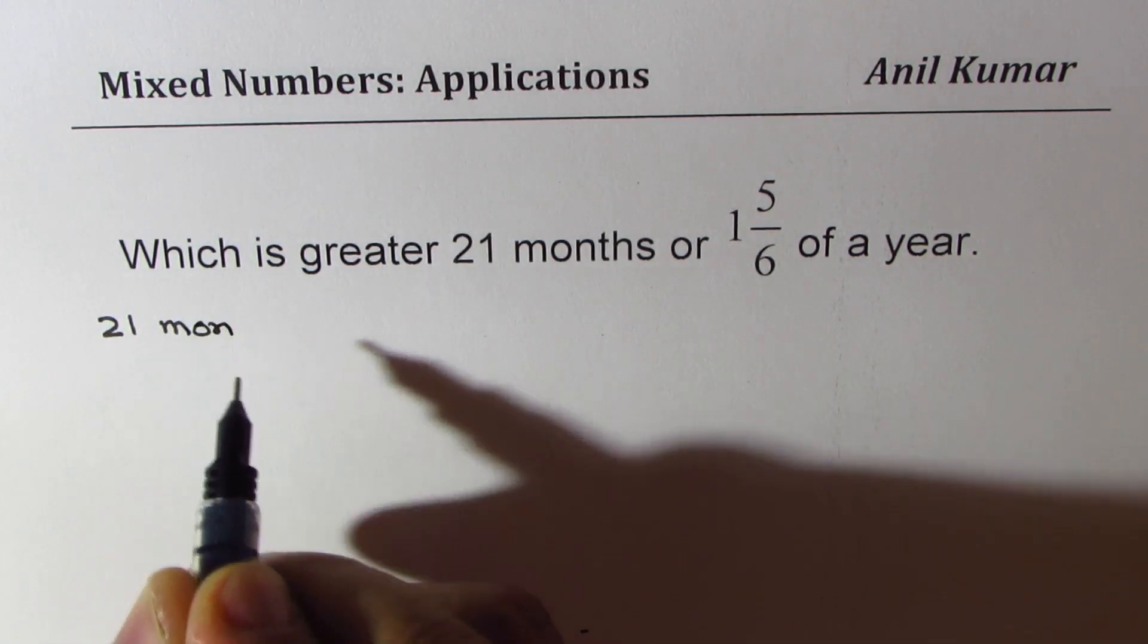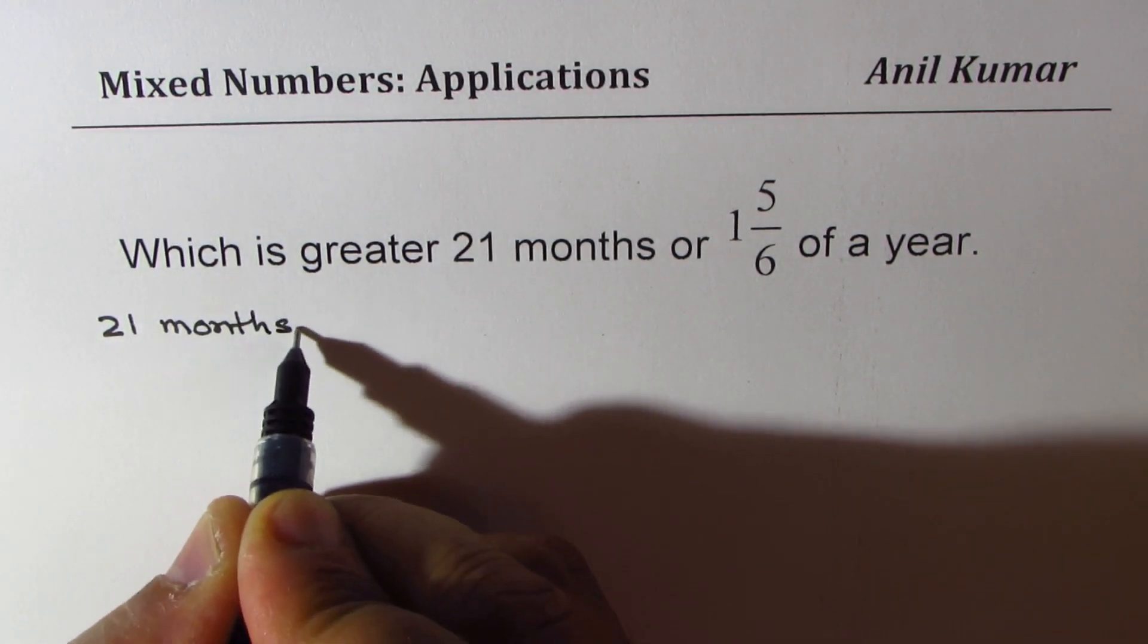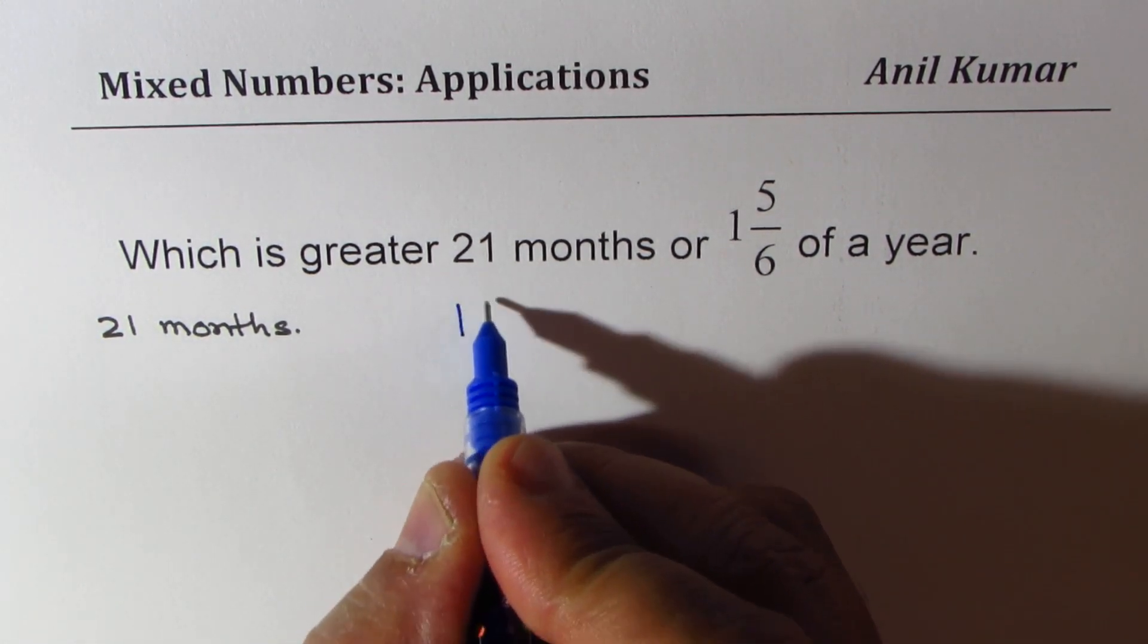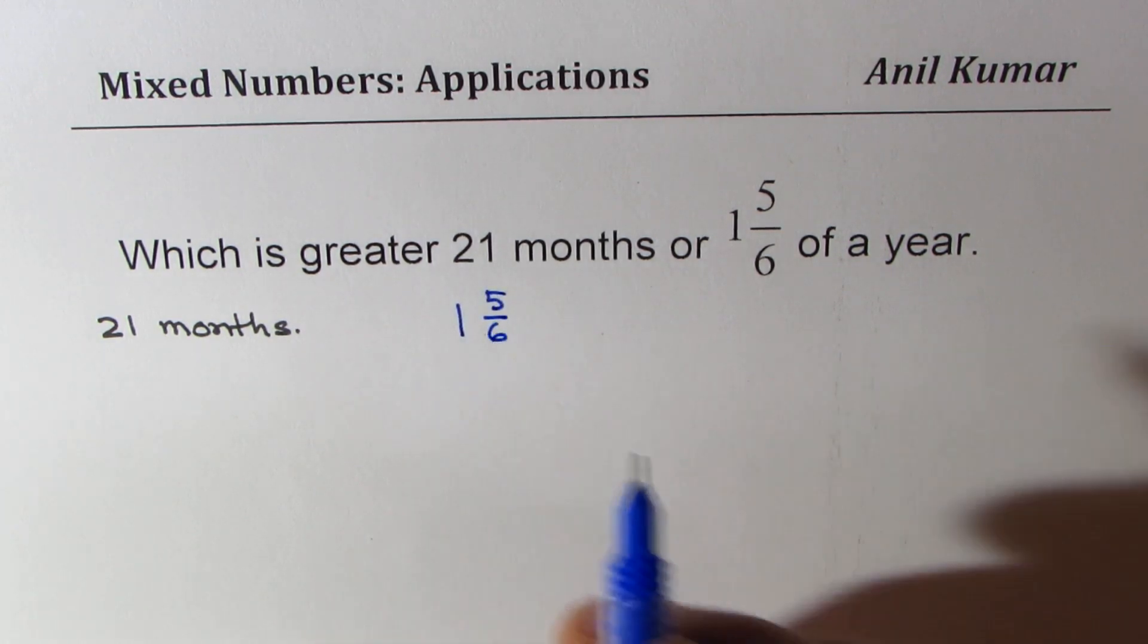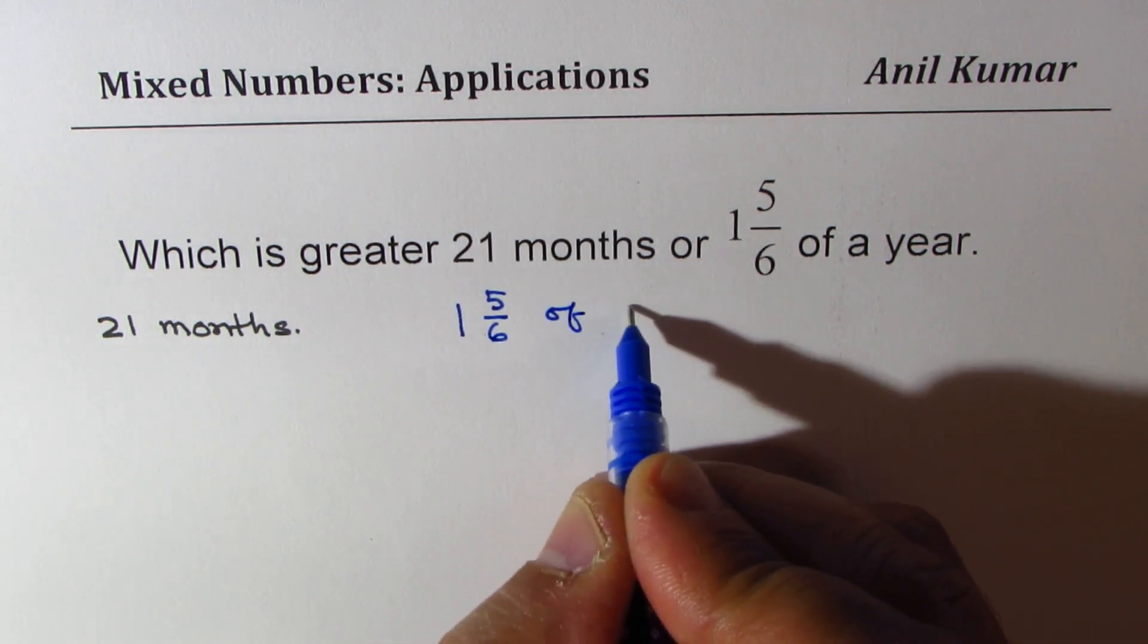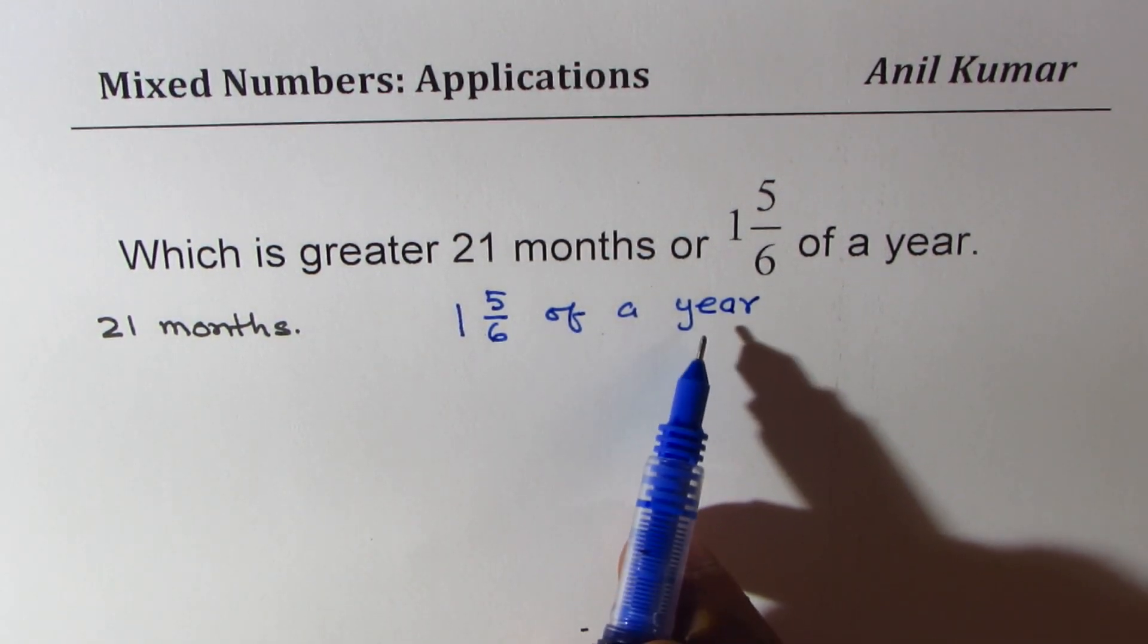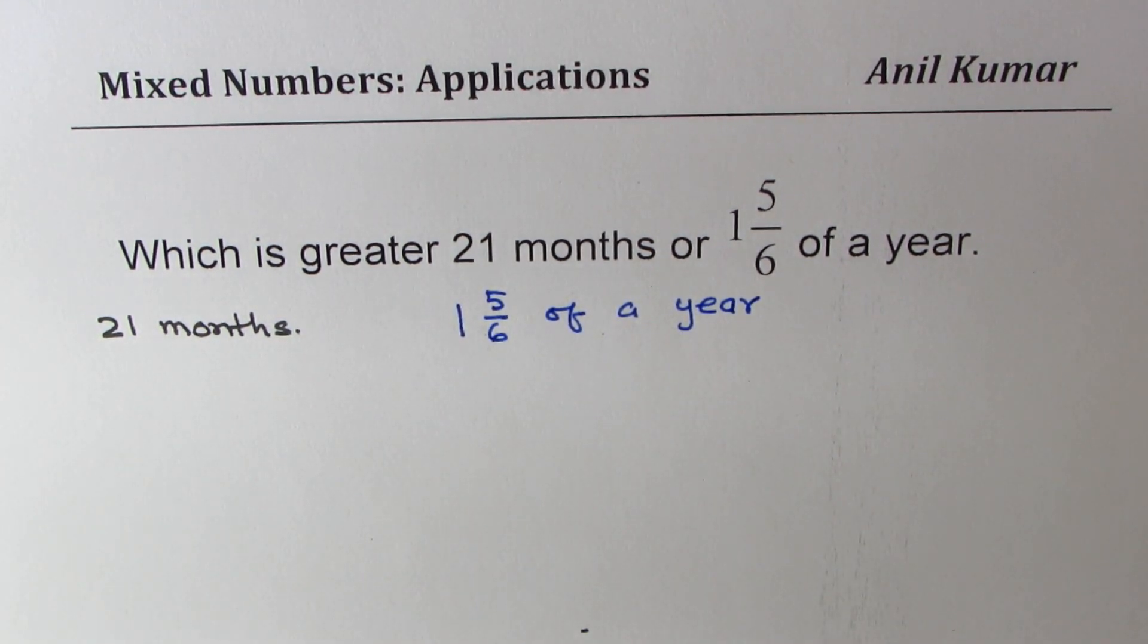that on one side: 21 months. Now the question here is what is 1 5/6 of a year, right? This is what we need to understand. Now one year is 12 months, let me write down right on